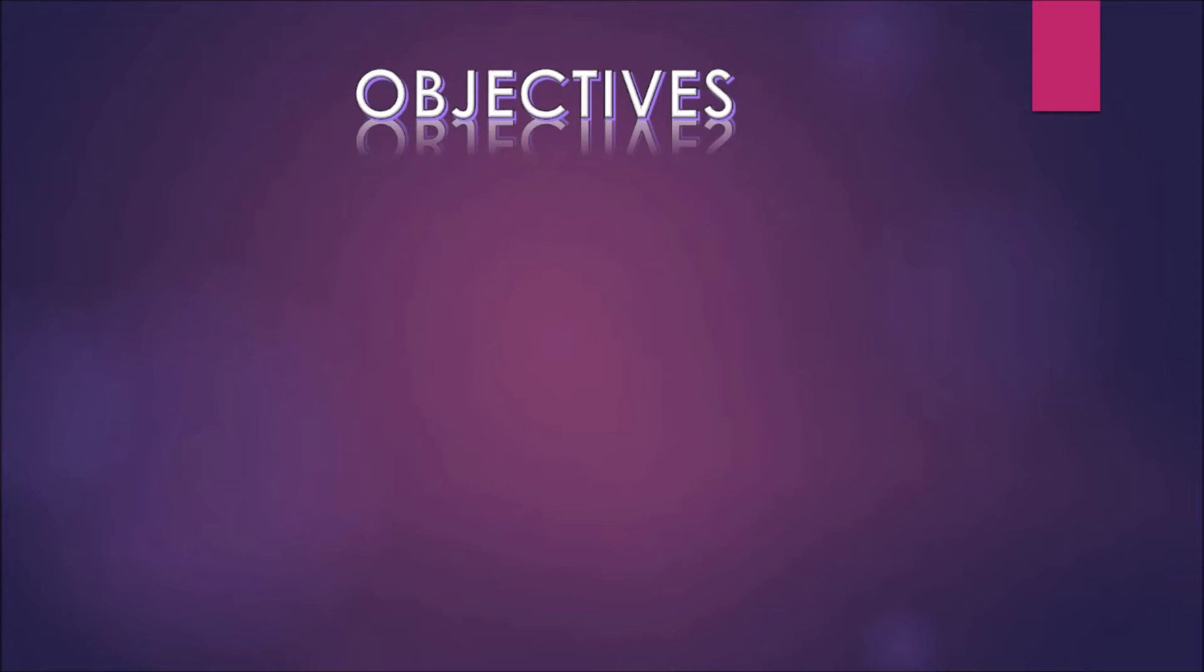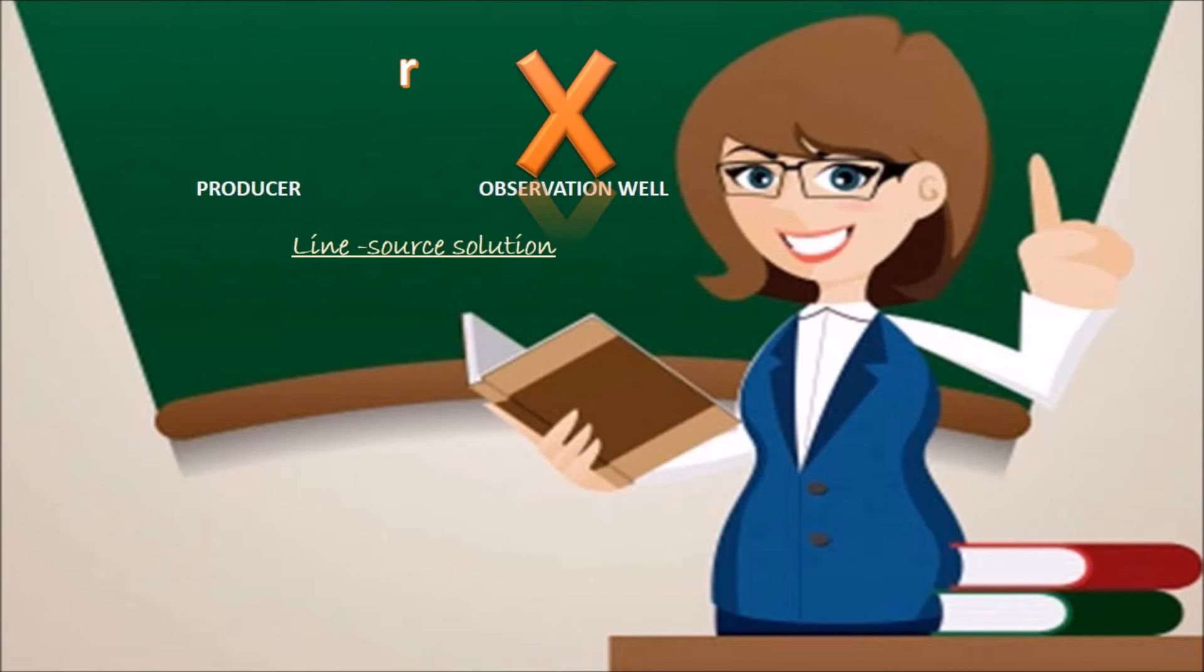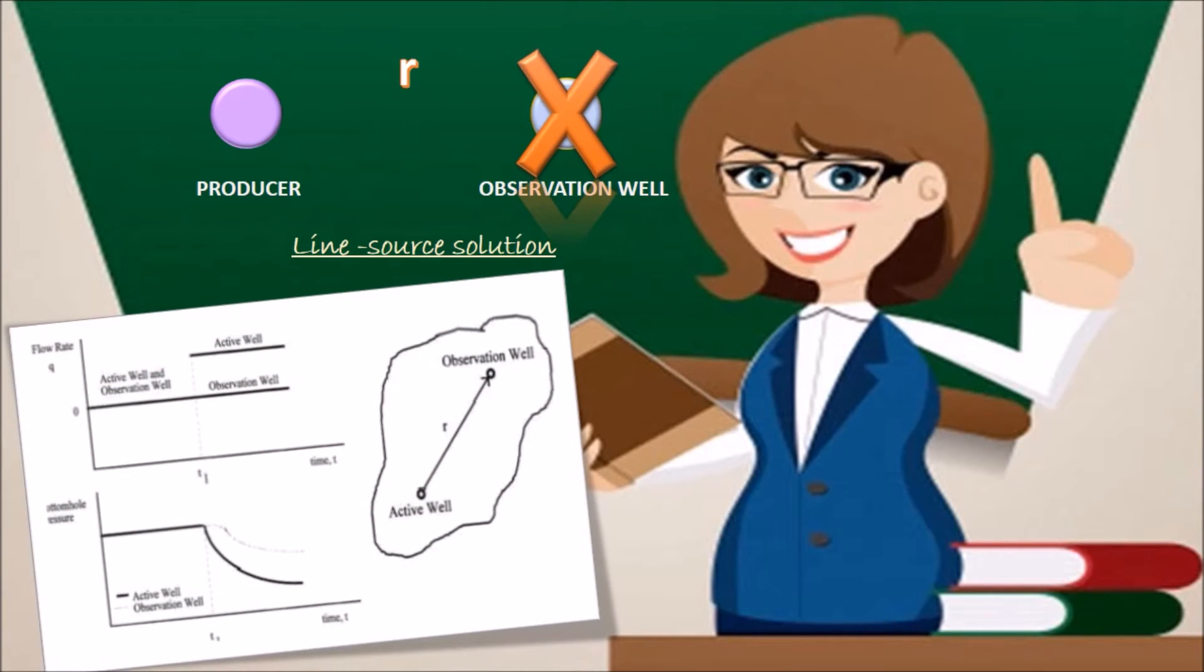The objective of studying interference testing is to obtain permeability and porosity. Let us assume that there is one producer and one observation well in an infinite reservoir. The observation well does not produce. Producer and the observation well are separated by a distance r. The effect of producer in an observation well is given by the line source solution.